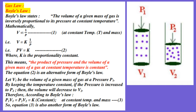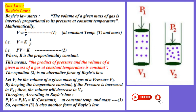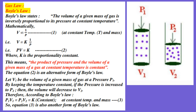So, if you want to see Boyle's Law in mathematical form: V is inversely proportional to P, and PV equal to K, and P1V1 equal to P2V2 equal to K.